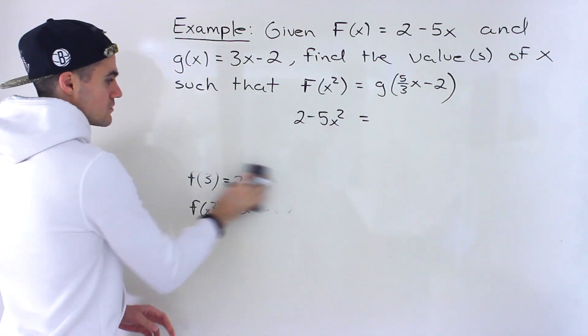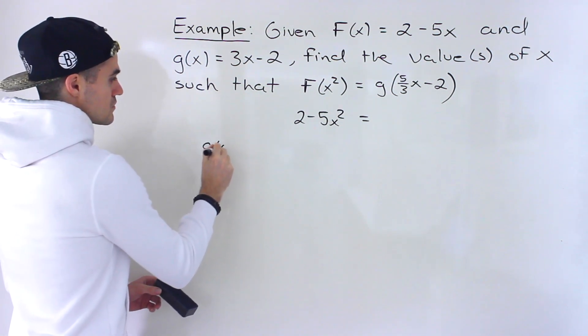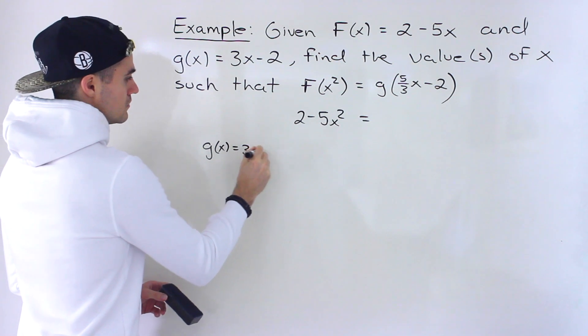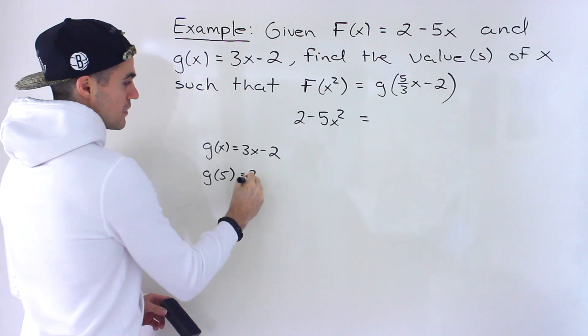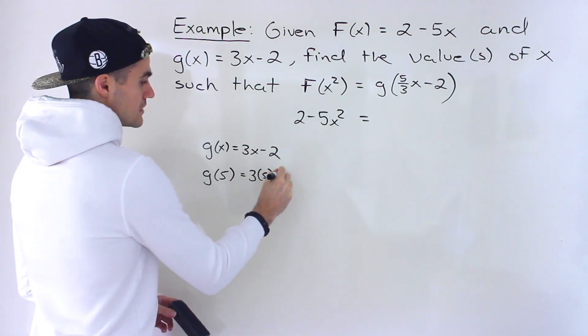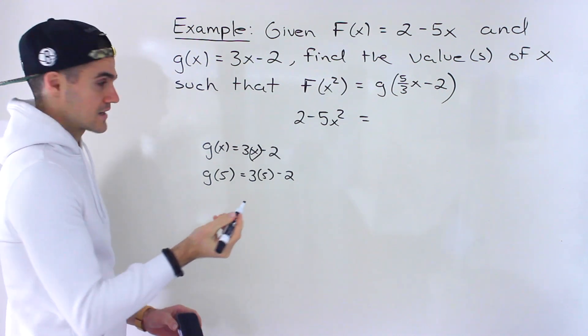Now let's work with this right side. So notice that g of x is equal to 3x minus 2. For example, if we were finding g of 5, it would be 3 times 5 minus 2. So whatever goes here goes in for that x value.